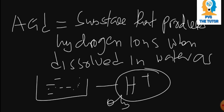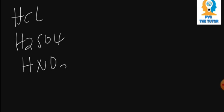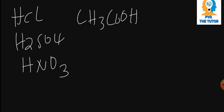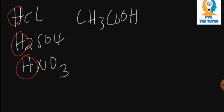Now let's look at some examples of acids. Some common examples are: hydrochloric acid, sulfuric acid, nitric acid, and ethanoic acid. When you look at them properly, they all have a hydrogen atom in them. For hydrochloric acid there is hydrogen, for sulfuric acid there is hydrogen, for nitric acid there is hydrogen, and for ethanoic acid there is hydrogen.